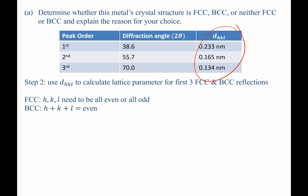With Step 1 finished, we turn to Step 2: using DHKL values to calculate the lattice parameter for the first three FCC and BCC reflections. To do so, we need to know what HKL values to use for each crystal structure type. For FCC, the book tells us that H, K, and L must be either all-even or all-odd — so 111 works, but 110 does not. Zero is counted as an even number. For BCC, H plus K plus L must be an even number. In this introductory materials science course, we use these rules without deriving them.